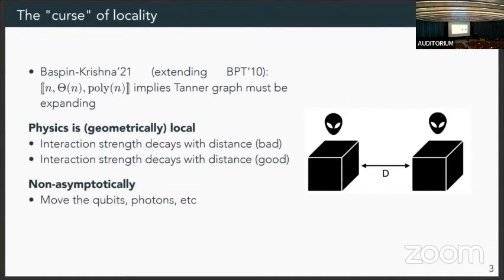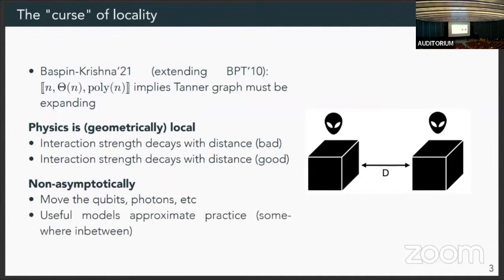So this is quite bad if we want to implement something with a high degree of connectivity. It's also kind of good because this allows us to build isolated systems. So if we have a system where as we scale it up, all our degrees of freedom are talking to each other, then our noise will be increasing as well. So it does help us out in some aspects. Non-asymptotically, we can take various approaches. For example, you can move qubits, like if you have ions or neutral atoms, you can use some sort of photonic things, or you can just build long wires. But ultimately, at the end of the day, our useful model is going to approximate what we can do in practice.